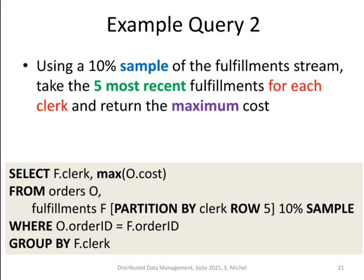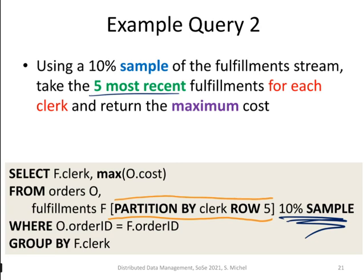Another example: using a 10% sample of the fulfillment stream, we want to take the five most recent fulfillments for each clerk and return the maximum cost. In addition to normal SQL, we have the specification of sampling — here, a 10% sample. For the fulfillments, we partition the stream based on the clerk, and for each clerk we take the last five rows. Then we have these partitions of five rows per clerk, and based on this we can do a group by clerk and return the maximum cost.